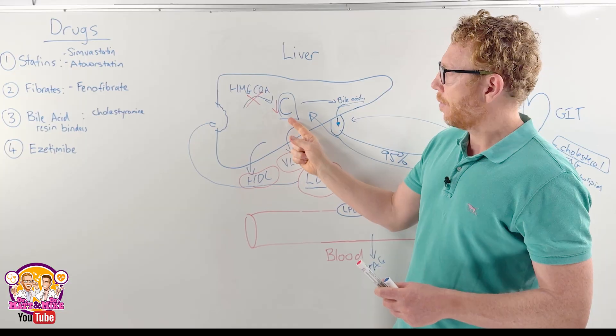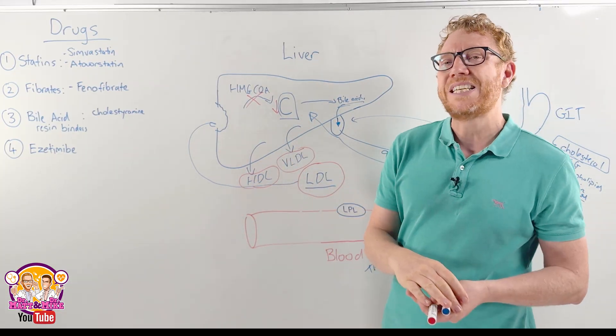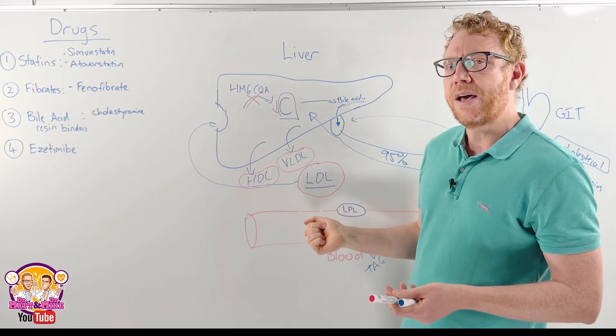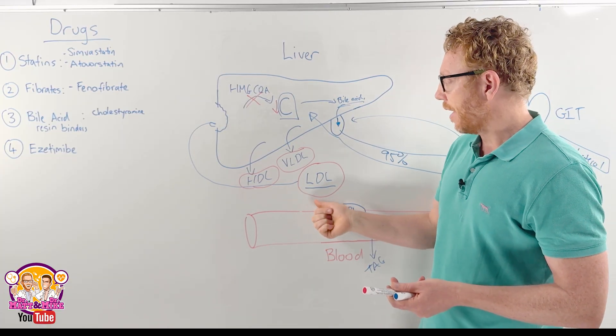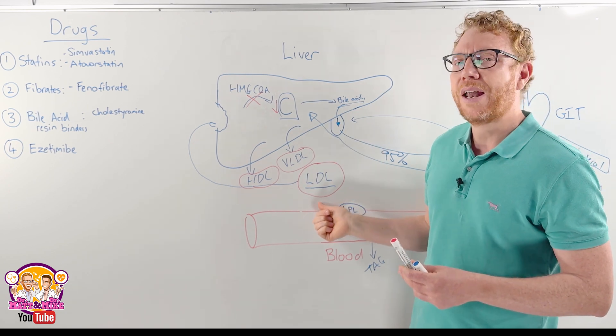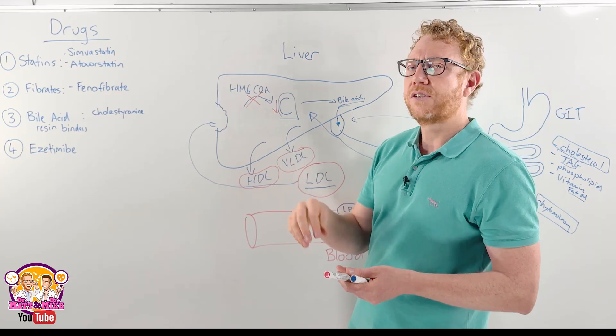At the same time, the liver pumps out more HDLs to go around the body and reclaim cholesterol in tissue. So that can reduce the amount of LDLs or cholesterol in the endothelium or subendothelium, which is where the plaques start.